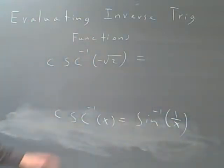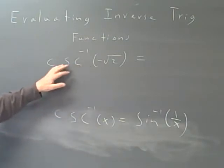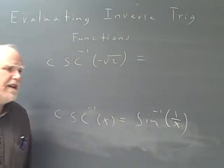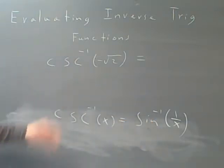That nice little identity. So I never deal with the cosecant or the secant or the cotangent inverses. I always use an identity to change it to sine inverse, cosine inverse, and tangent inverse.